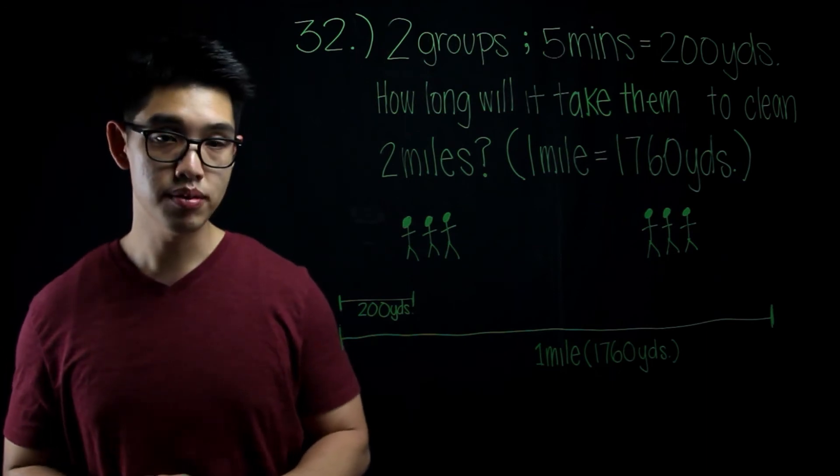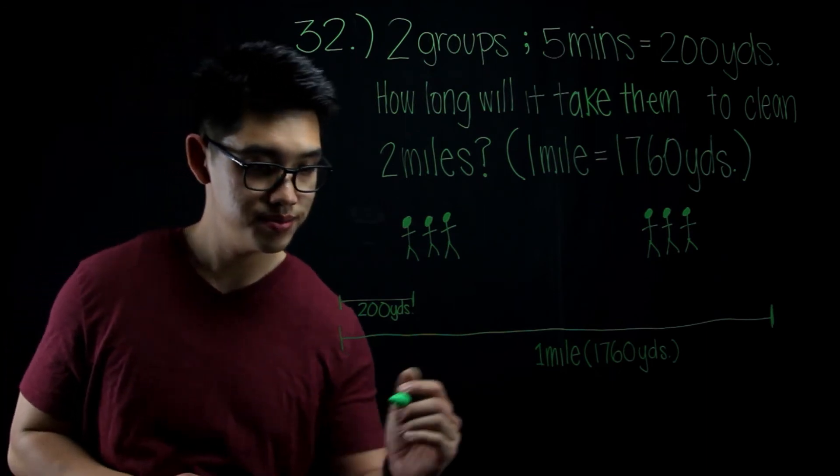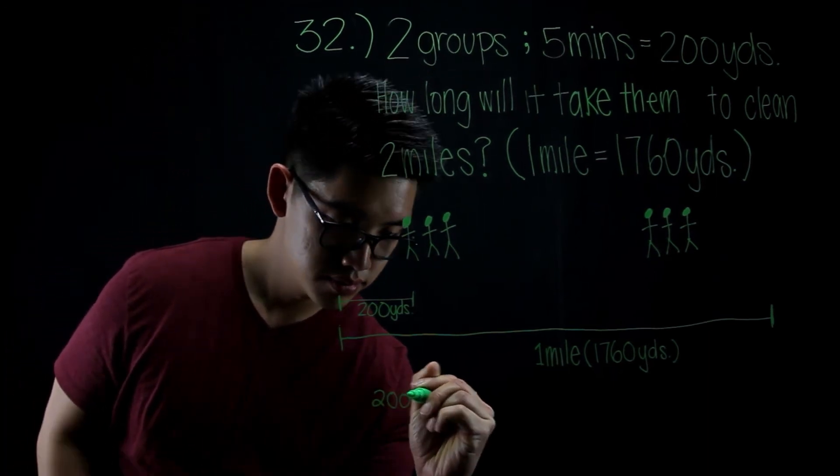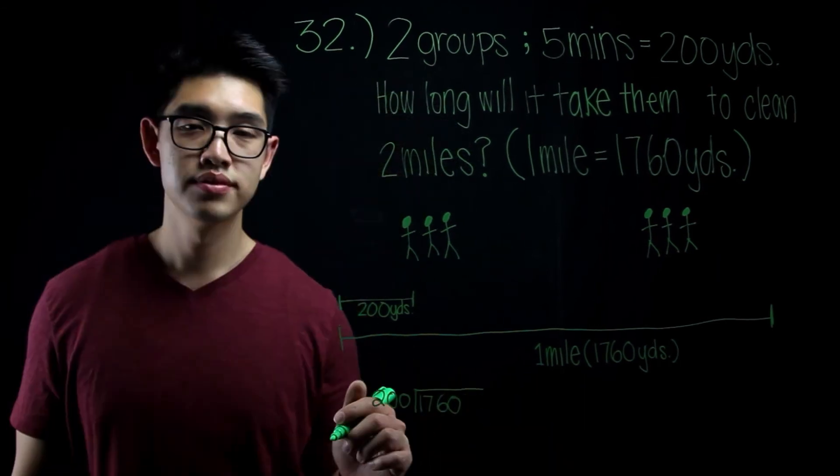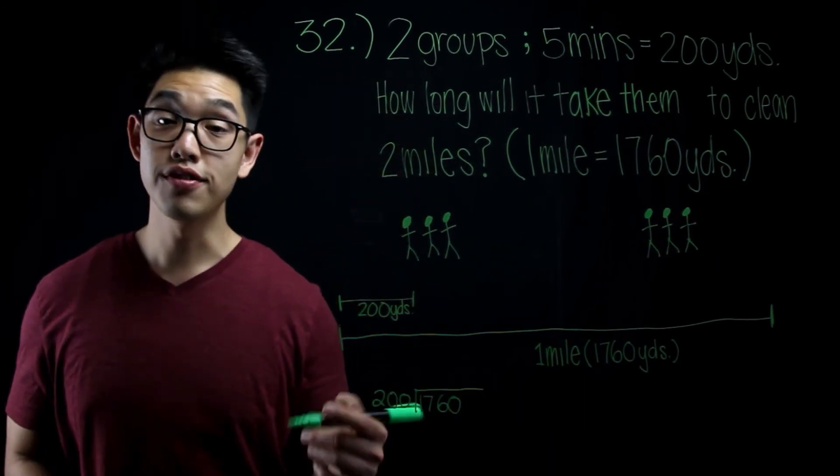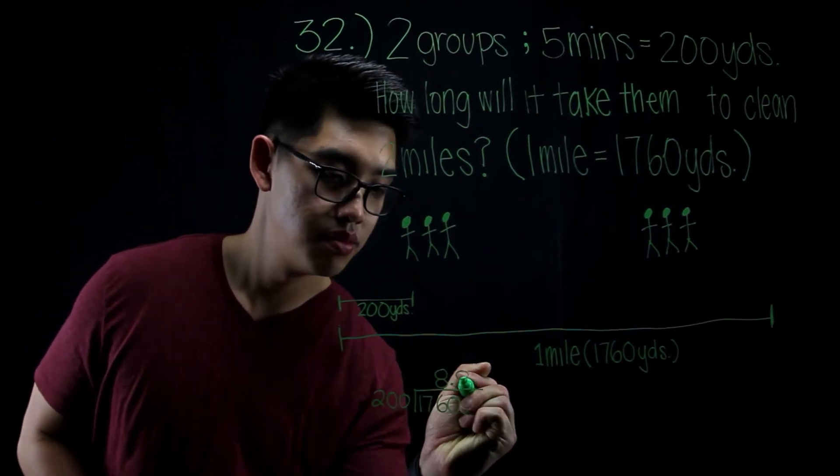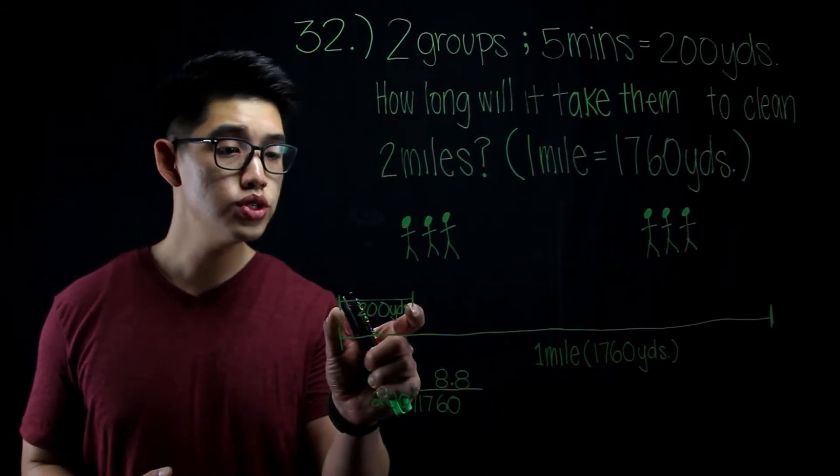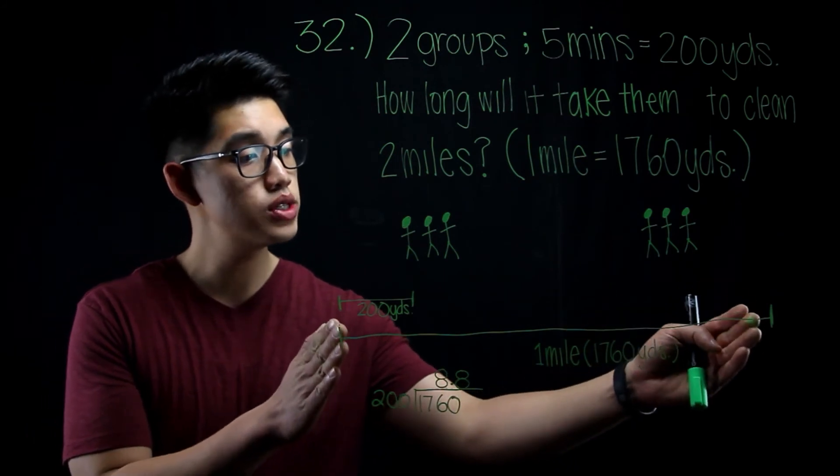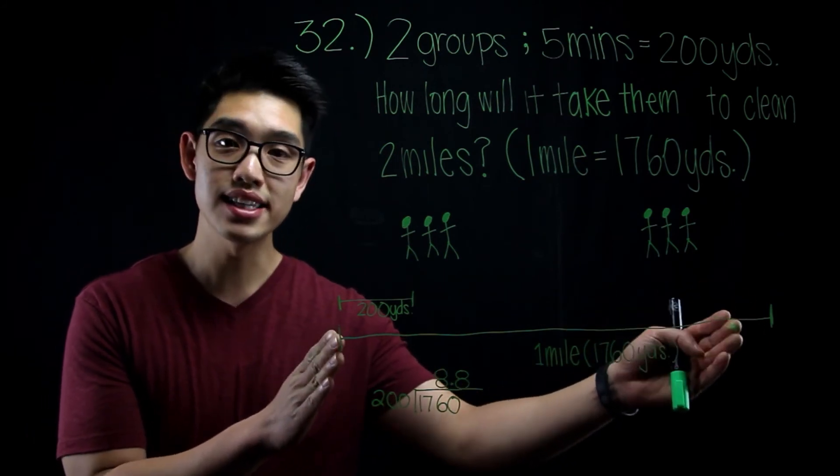This is a division problem. So I want to write the division problem here. 1,760 divided by 200 is 8.8. Which means that 200 yards goes into 1,760 yards 8.8 times.